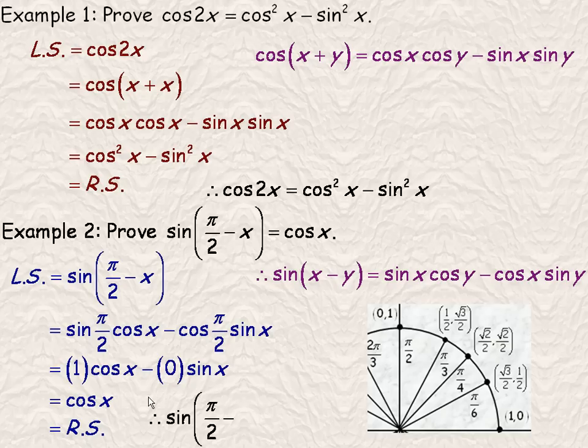So that is what's on the right side. And then we would state, therefore, the sine of π/2 - x is equivalent to cos x.